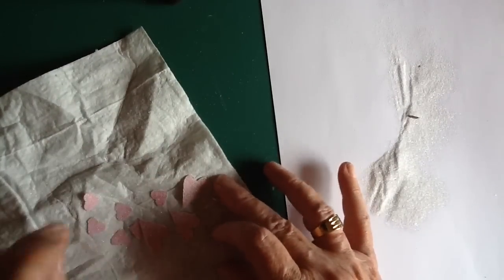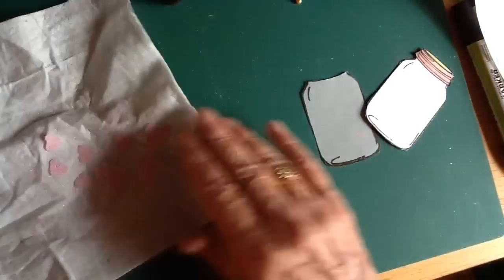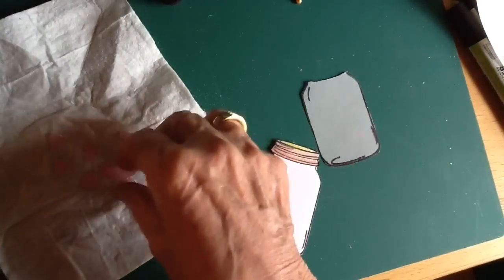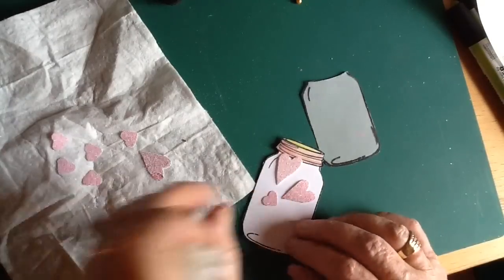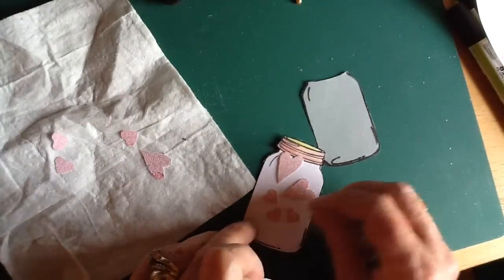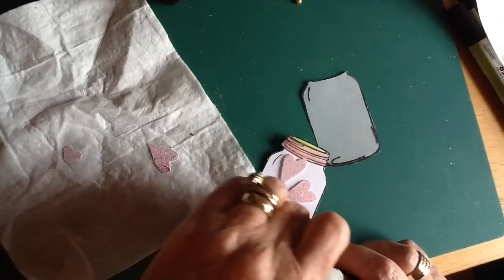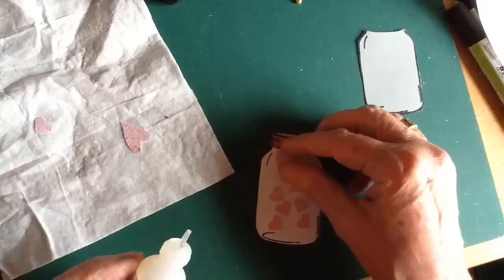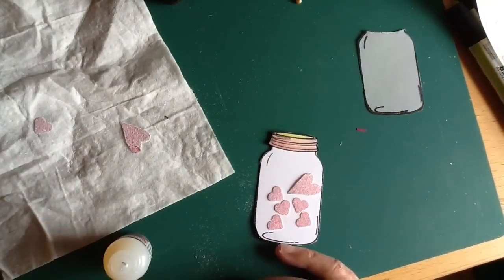So there we have some very evenly colored little sparkly hearts. I'm just going to work out whereabouts on the jar I want them to go. Again, I would probably have been better using tweezers, but I'm not terribly good at tweezers actually. I don't know if it's something to do with the fact that I'm left handed, but I seem to be clumsy when I use them. Even more clumsy than you can see me being now.